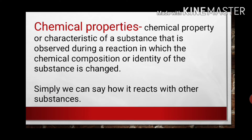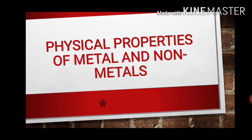The second thing we use is chemical properties. A chemical property is a characteristic of a substance that is observed during a reaction in which the chemical composition or identity of the substance is changed. On the basis of chemical properties, you can distinguish whether the given material is metal or non-metal. In this video, we will focus only on the physical properties; chemical properties will be discussed in the next part.